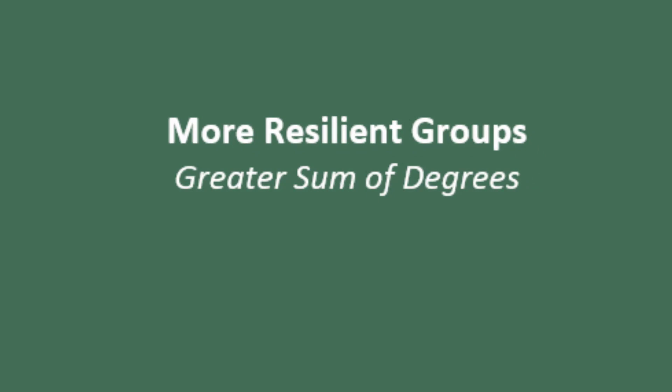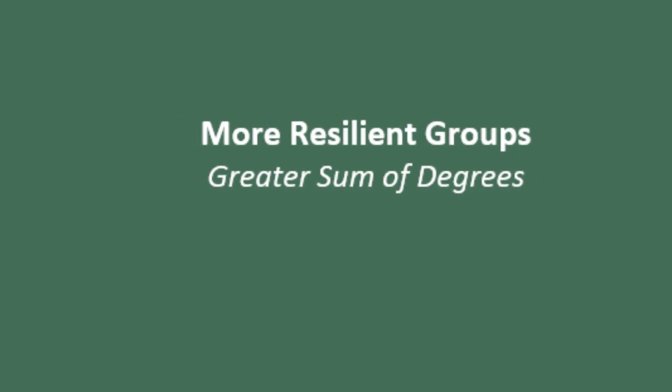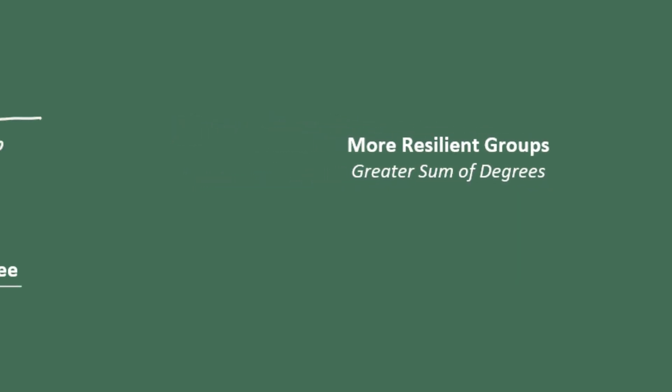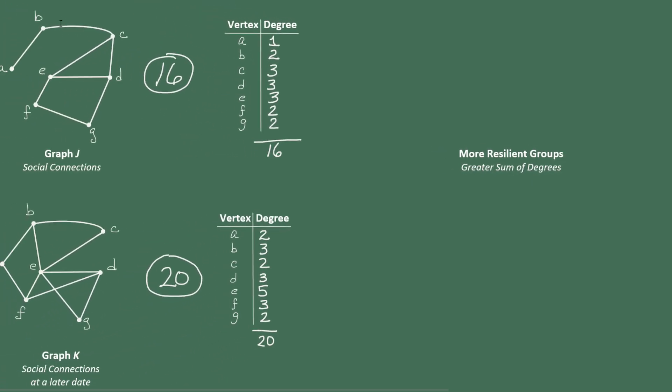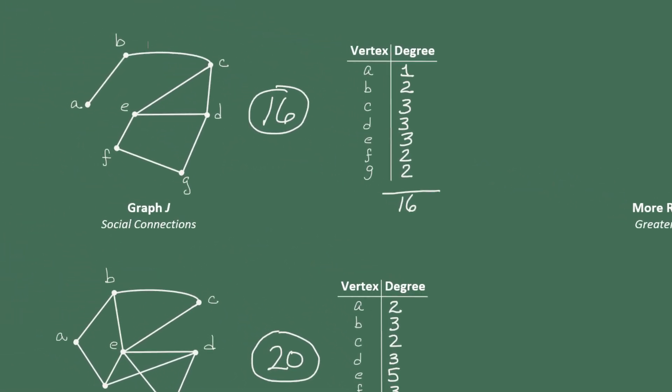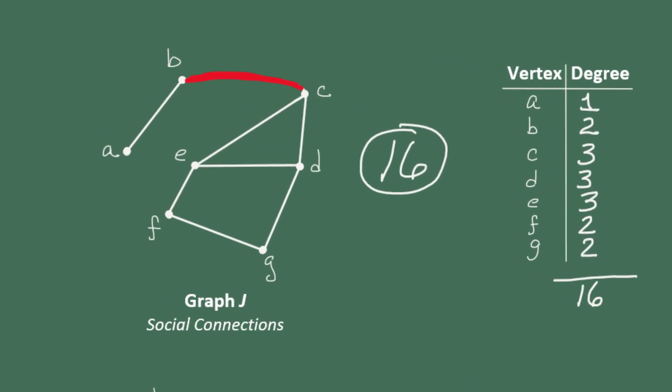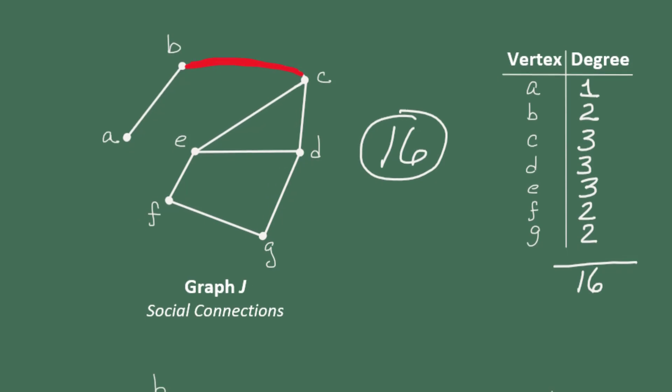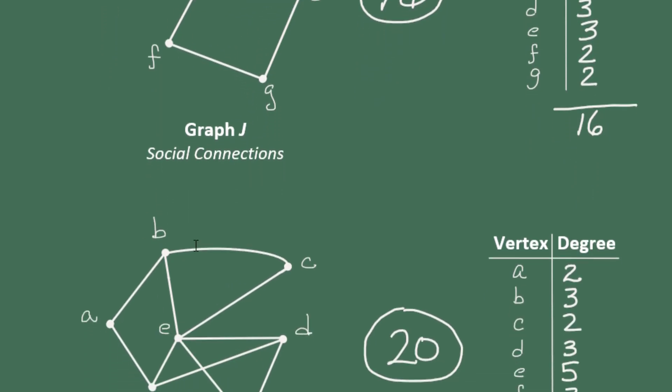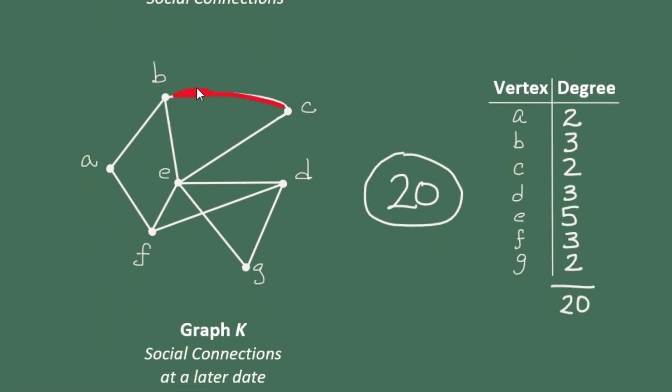One way to understand this is to think about if a connection is lost, what impact does that have on the group? So for example, in graph J, if we were to lose the connection between B and C, then both A and B would have no social ties to the rest of the group. And in essence, the group has fallen apart. Whereas if we lose the connection between B and C in graph K, there are enough other connections to compensate so that B and A are still part of this social group.